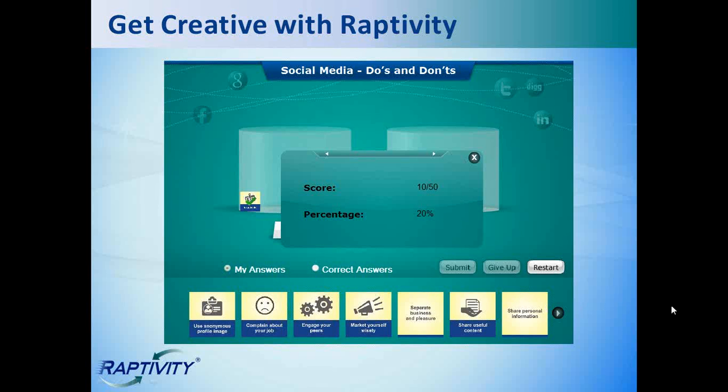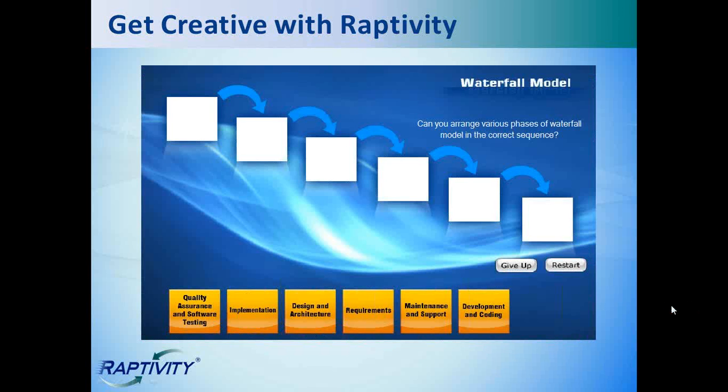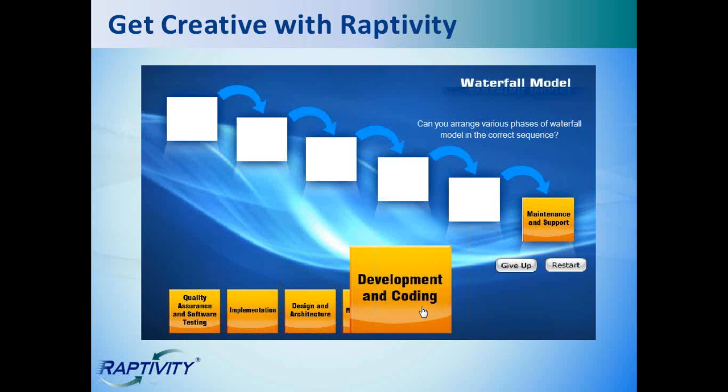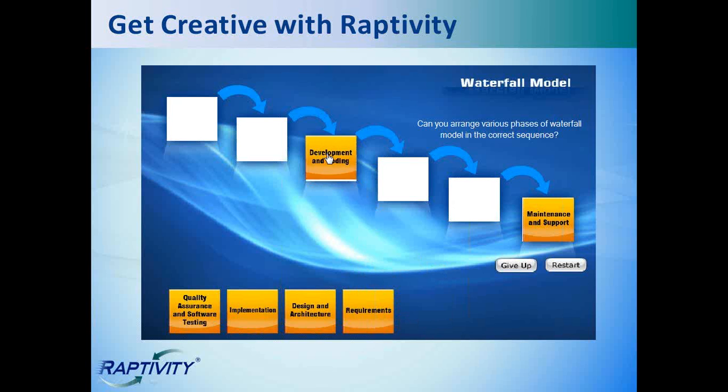So the next drag, drop, and sort sample is a waterfall model. Now the previous example was a classification exercise with delayed feedback. Here we're using this template as a sequencing activity with immediate feedback. So our goal is to place these steps in the correct order. And notice if they're misplaced, it jumps back into the bucket and we get feedback that it's incorrect.